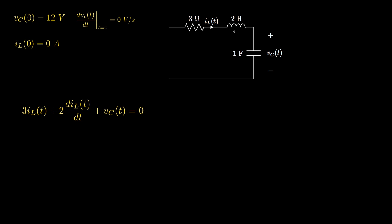The voltage across the inductor is the inductance times the derivative of the current. The voltage across the capacitor is the integral of the current; however, we're going to leave it as the capacitor voltage and then rewrite the inductor current in terms of this capacitor voltage.